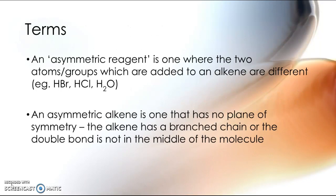So in simple terms, or not so simple terms, but in chemistry terms, an asymmetric alkene is one that has no plane of symmetry. So it could be branched, it could have other functional groups on there, or the double bond might not be in the middle of the molecule.